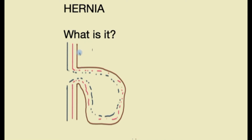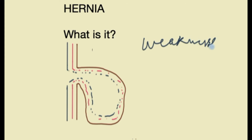Just to illustrate that point, let's assume this is the abdominal wall and its layers. This is a hernia, and this has occurred because there is a weakness in this part of the abdominal wall. This weakness has caused all layers to travel outside, thus producing a hernia or a lump.